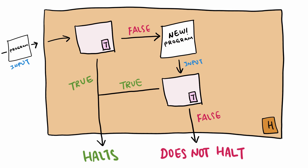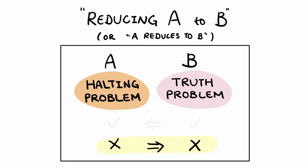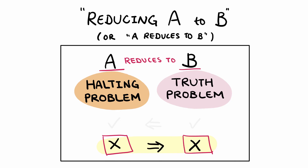So here we have a clear description of how program H will use program T. The reduction is complete. And we can finally say that this contradicts what we know. Since we showed that the halting problem reduces to the truth problem, and we know that the halting problem is undecidable, then the truth problem is also undecidable. Because if the truth problem was solvable and program T existed, then we would have solved the halting problem.